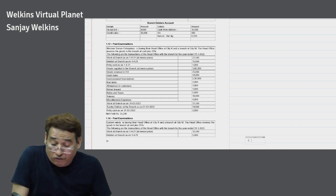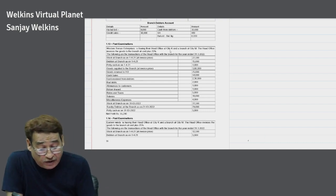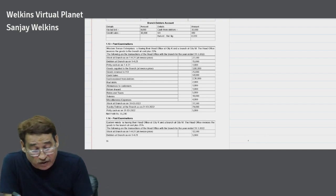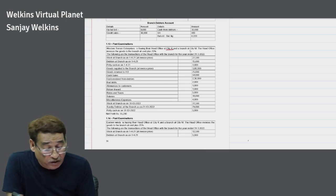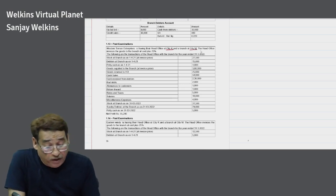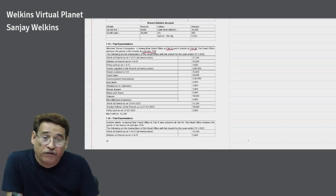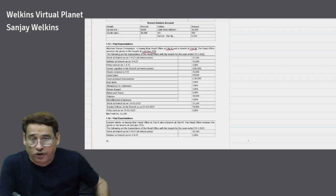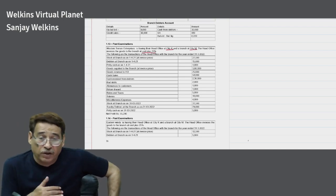In this question, Western Terran Enterprises is having their head office at City K and their branch at City A. The head office invoices goods to the branch at cost plus 25%. Now this is the line which should attract your attention.